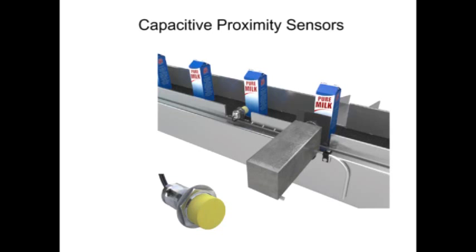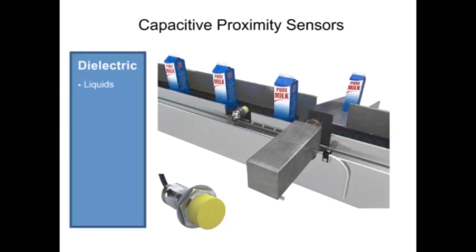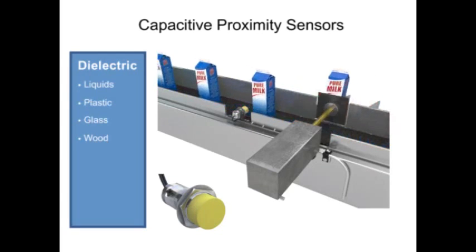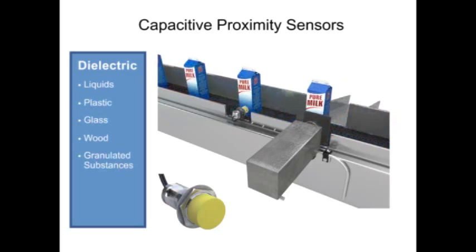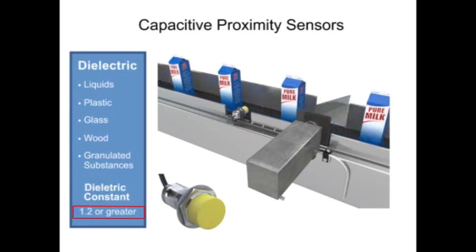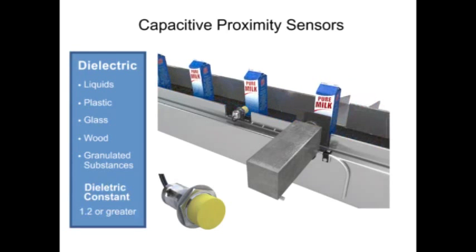Capacitive proximity sensors, on the other hand, can detect dielectric materials such as liquids, plastic, glass, wood, and granulated substances, as long as the material has a dielectric constant of 1.2 or more. Their range is from 3mm to 15mm depending on the dielectric material to be detected.